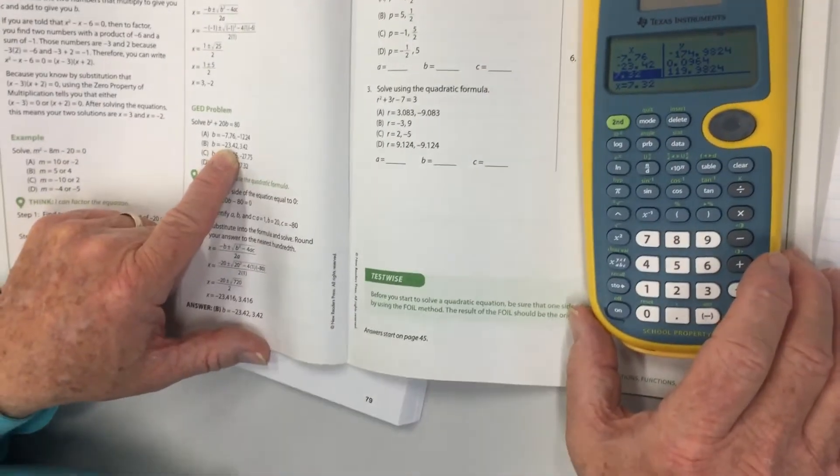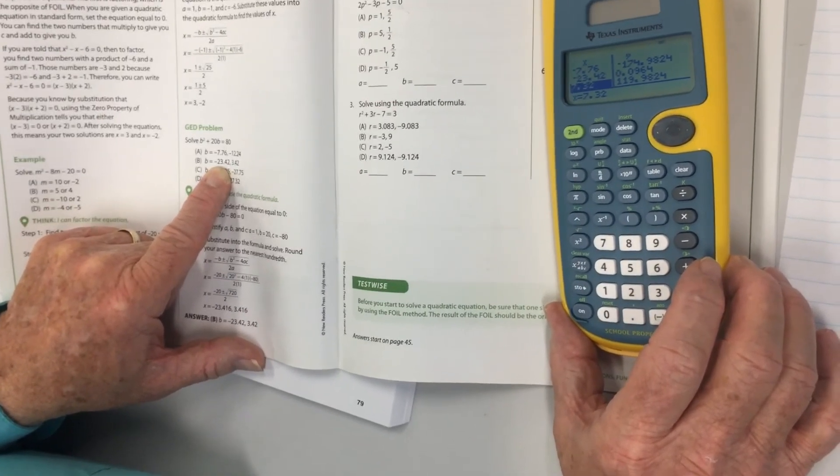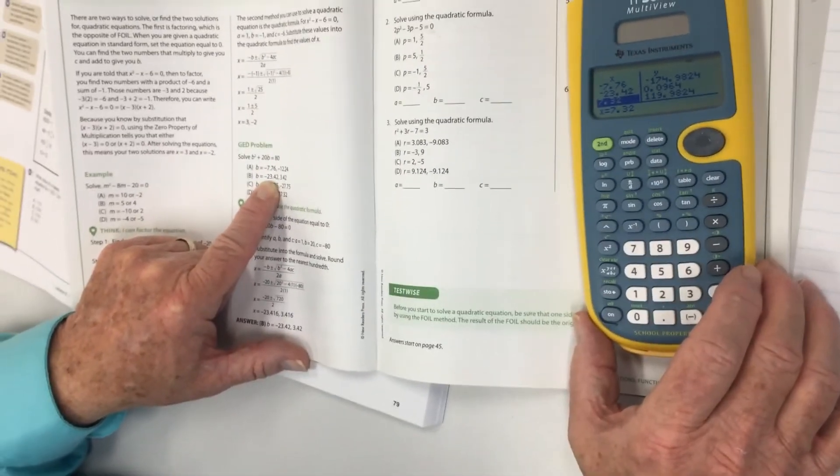So we go back to our negative 23.42, which would be the answer to that, solving that equation.